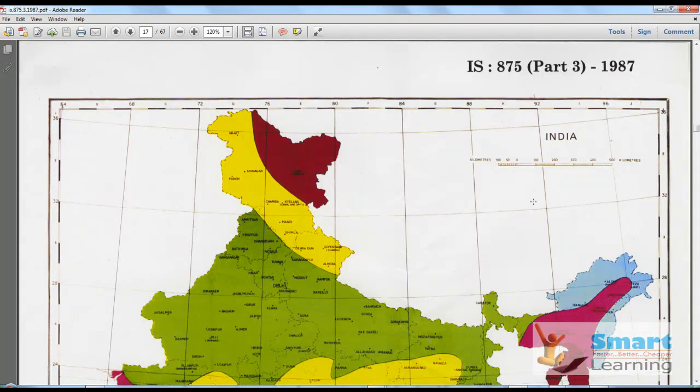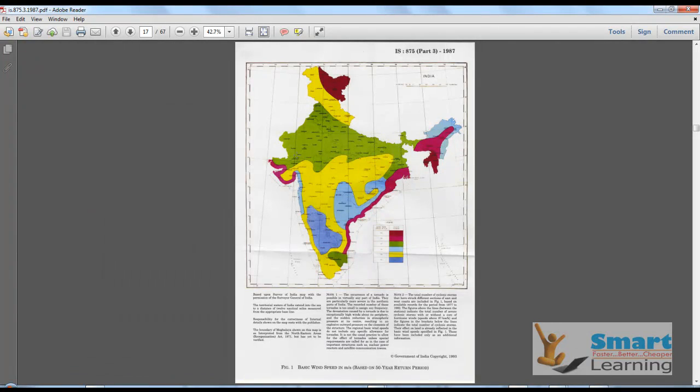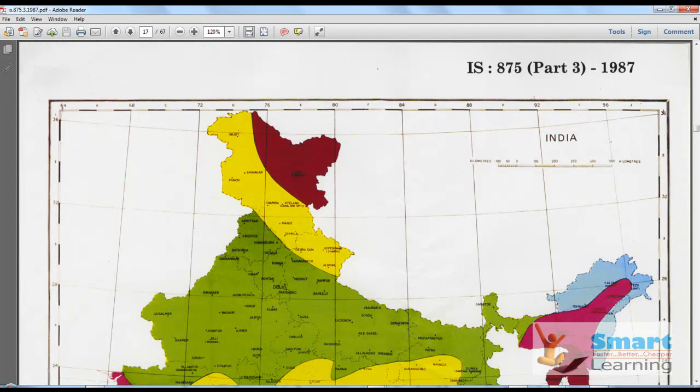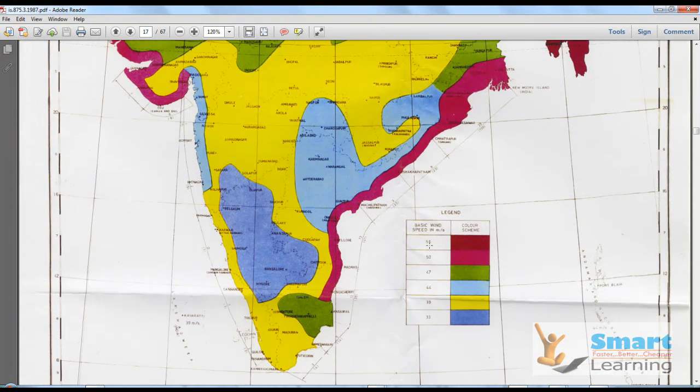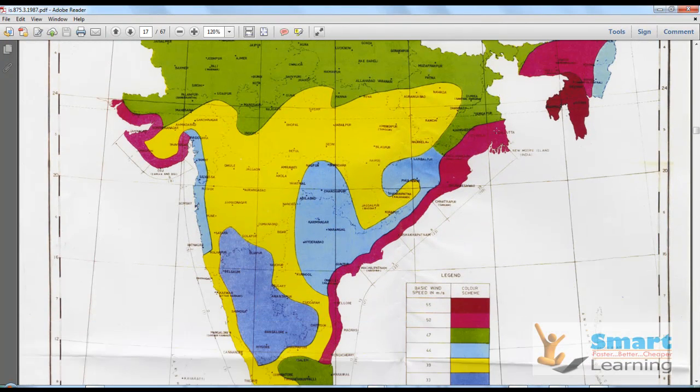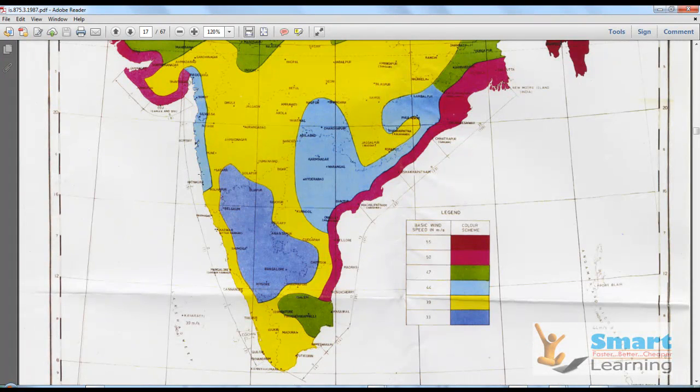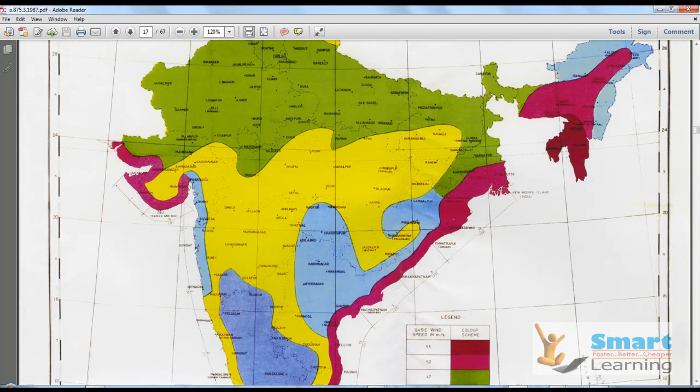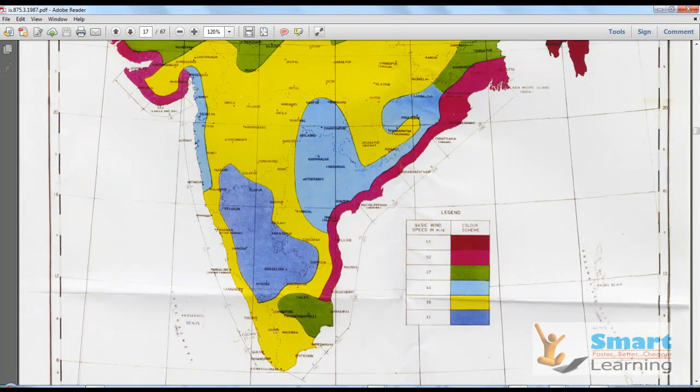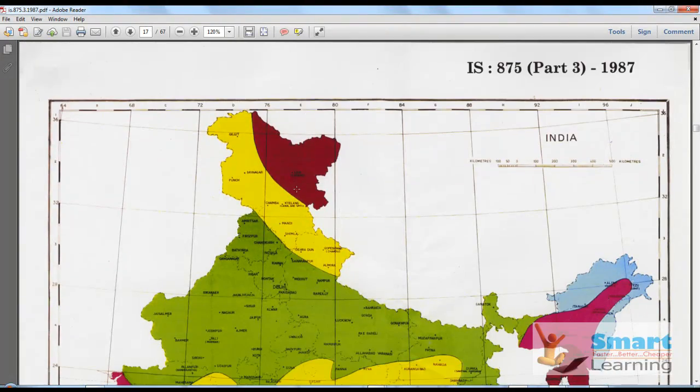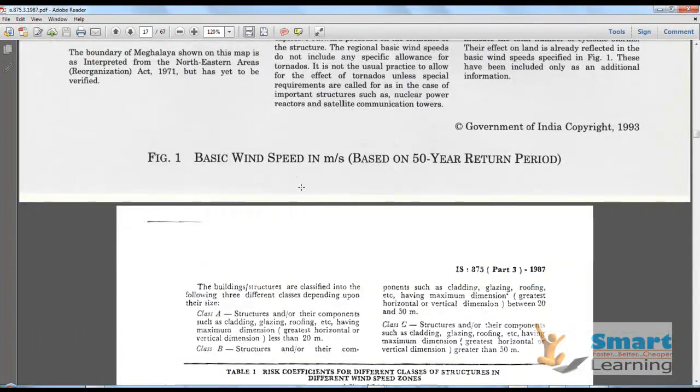Here you can see the typical wind speed map. These are different areas with colors ranging from 55 meters per second to 33. The peak areas are in the coastal belt areas. You can see 44 in Mumbai, Surat and these regions. 55 you can see in coastal belts like Visakhapatnam, Vellore, Madras, and Bhubaneswar, which have higher values. These areas show 39. Each country has their own wind graph that you can follow.